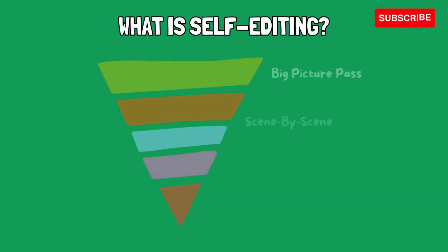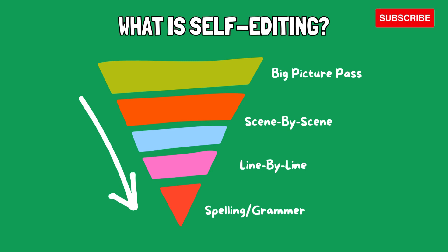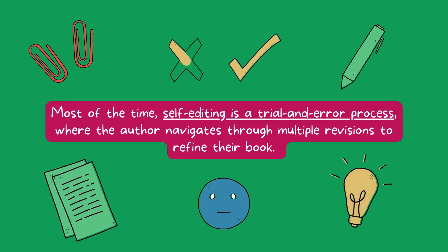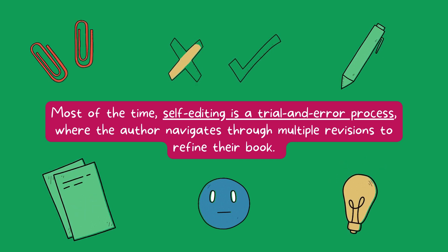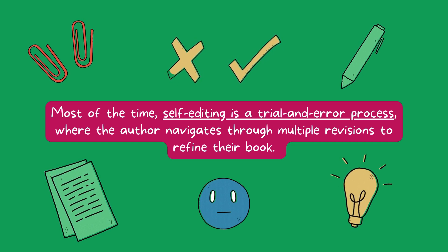In general, self-editing starts with the big picture pass, also known as the structural edit, and then the author zooms in onto the finer details, which include a scene-by-scene edit, line-by-line edit, and lastly the nitty-gritty stuff like spelling and grammar issues. This process allows the author to cover the entire scope of their book logically without missing any crucial checks and ensuring a high-quality book at the end. Most of the time, self-editing is a trial-and-error process where the author navigates through multiple revisions and iterations to refine their book, gaining a deeper understanding of their own writing style and the nuances of their story.